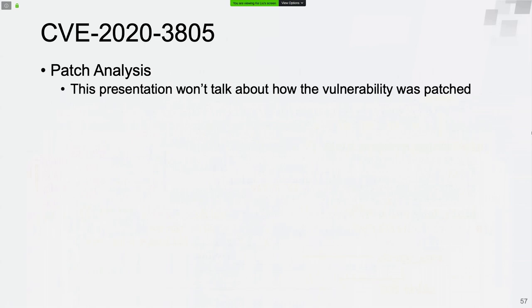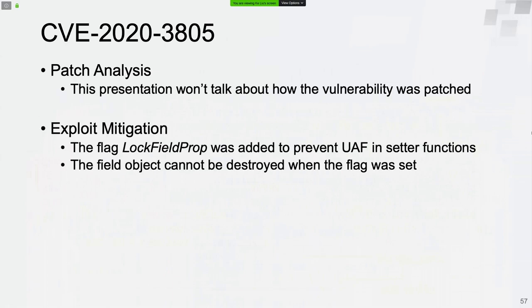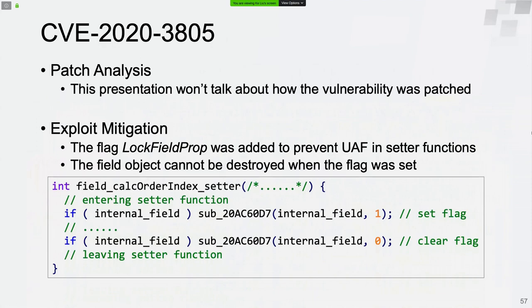Since we did not analyze the root cause of the vulnerability, we will not talk about how the vulnerability was patched. However, we will talk about how the exploit method was mitigated. In newer versions of Adobe Reader, a flag named lockFieldProperty was added to prevent the field object from being destroyed in property setter functions. If the flag value is set to 1, the field object cannot be destroyed. The flag is set to 1 when entering the setter function and cleared when leaving.